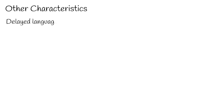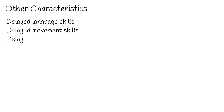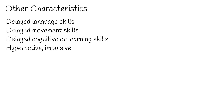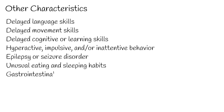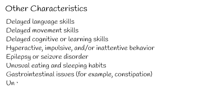Other characteristics: most people with ASD have other related characteristics. These might include delayed language skills, delayed movement skills, delayed cognitive or learning skills, hyperactive, impulsive, and/or inattentive behavior, epilepsy or seizure disorder, unusual eating and sleeping habits, and gastrointestinal issues, for example, constipation.